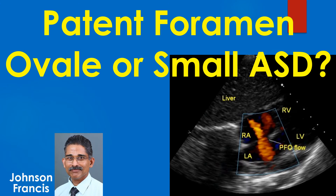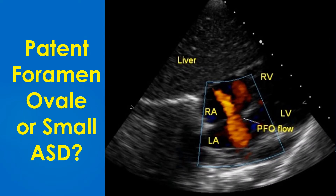Patent foramen ovale or small atrial septal defect. Echocardiogram from subcostal view showing the inter-atrial septum with a small defect and left to right flow across it.